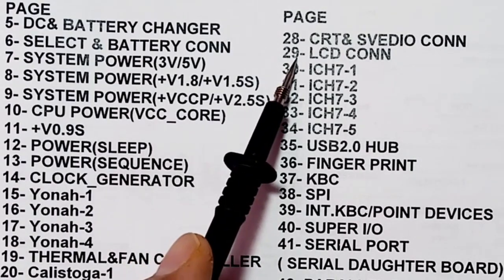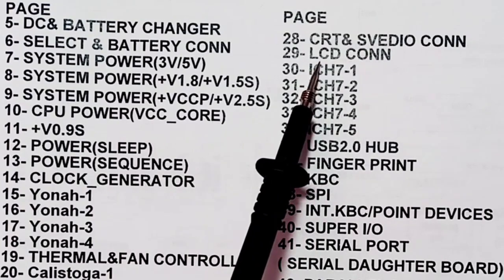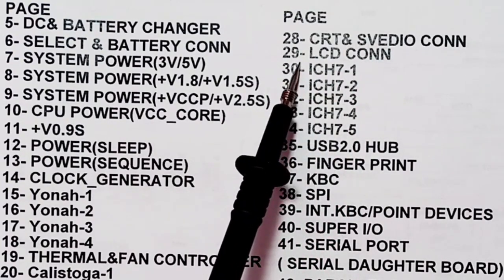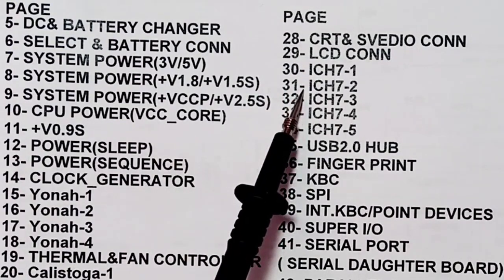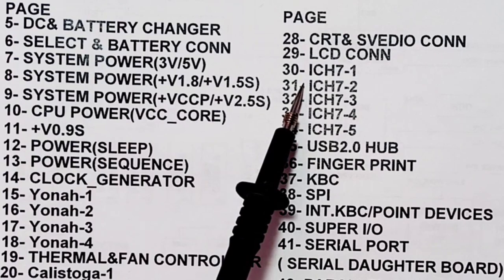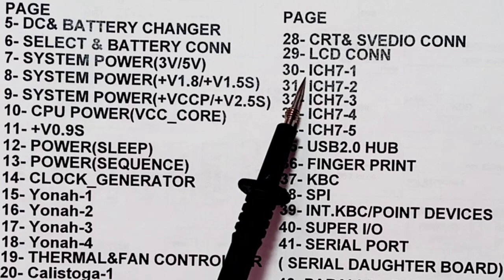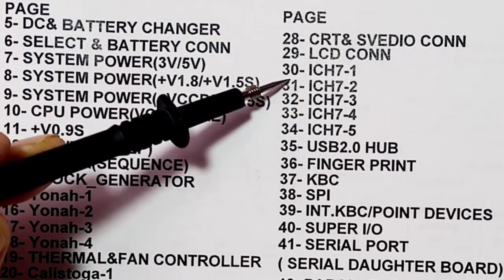In page 28 we have the CRT and S-video connectors, and in page 29 we have the LCD connector and the ICH — the input/output controller hub chipset. This chipset is responsible for controlling all ports and connectors on the motherboard, as well as the BIOS and keyboard. If many ports are failing on a motherboard it means you have a problem in the ICH controller chipset.